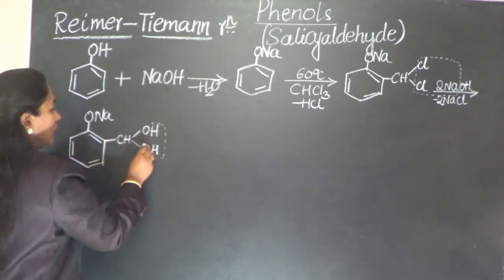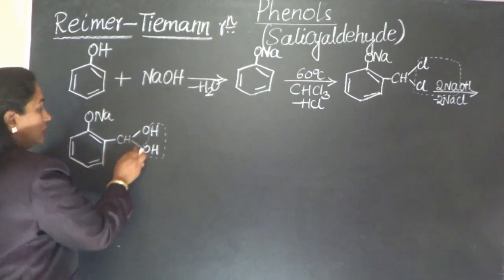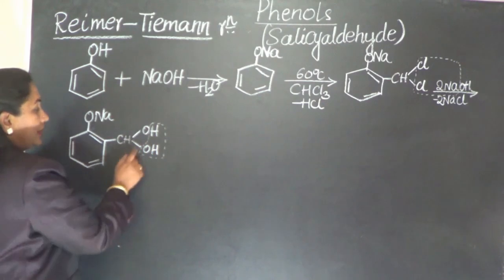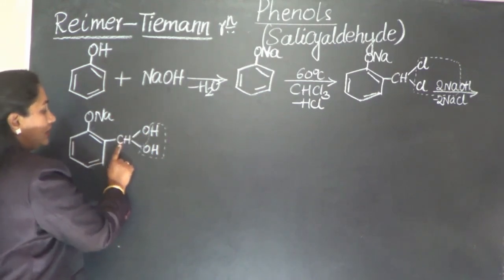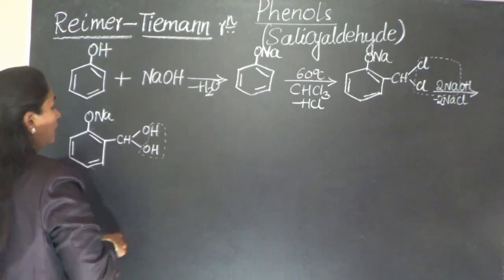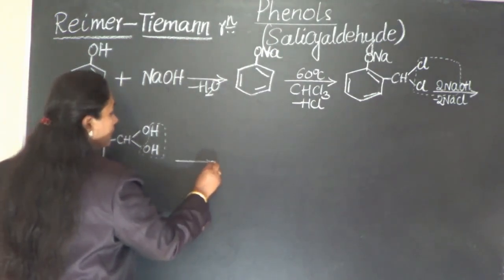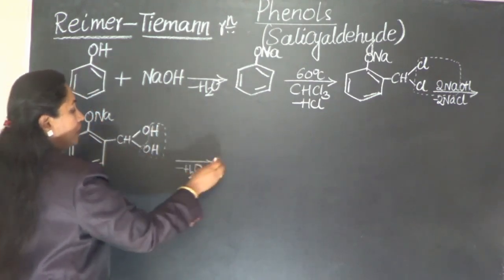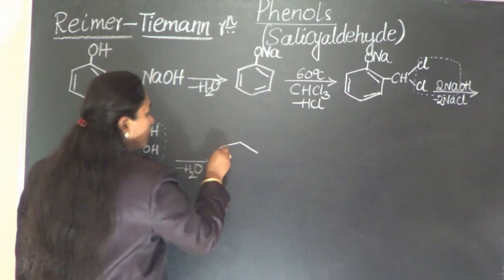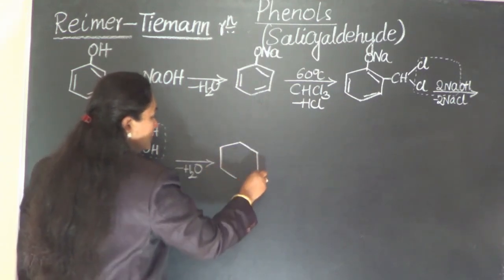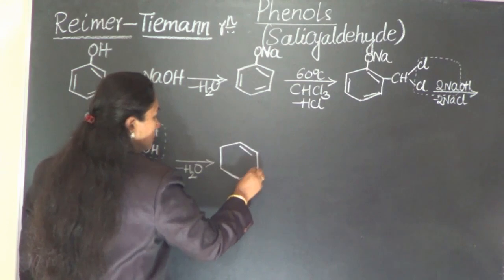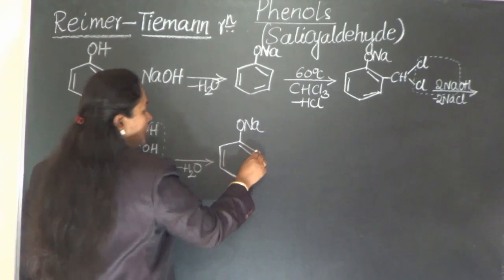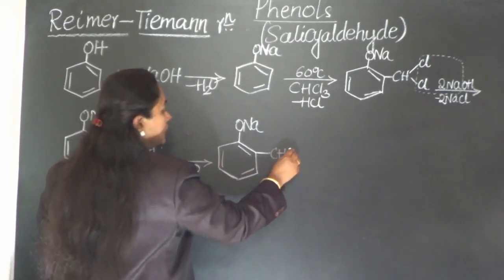The intermediate will lose a molecule of water. The CH linked to 2OH is unstable, so it loses H2O, and the oxygen gets attached to the carbon by means of a double covalent bond, forming a CHO group. The ONa on the ring remains intact.